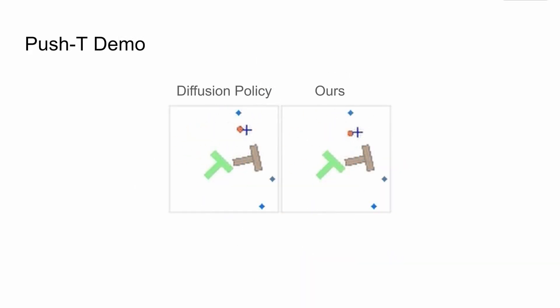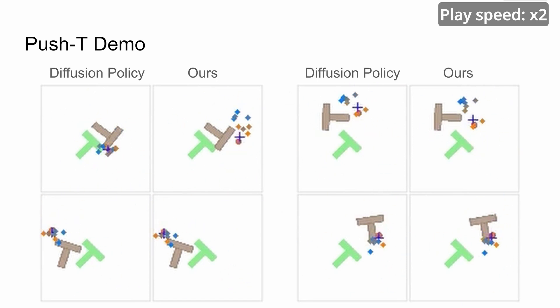In this demo, we show how action sequences are generated by iteratively applying the denoising diffusion process. Here are more examples.